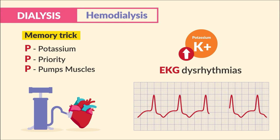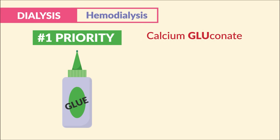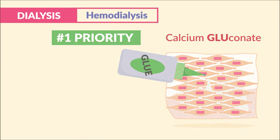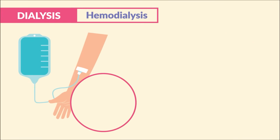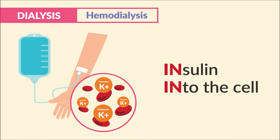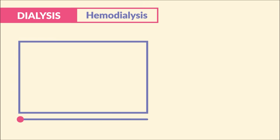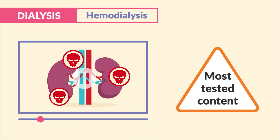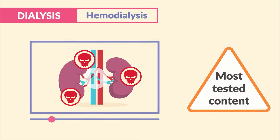Lots of exam questions come from here, so write this down. Priority is to give calcium gluconate to glue down those heart muscles, and then we also give IV regular insulin to push that potassium into the cell, out of the bloodstream. We go into way more detail about this in our renal failure lectures, but I wanted to give you the most tested content here to reinforce it.